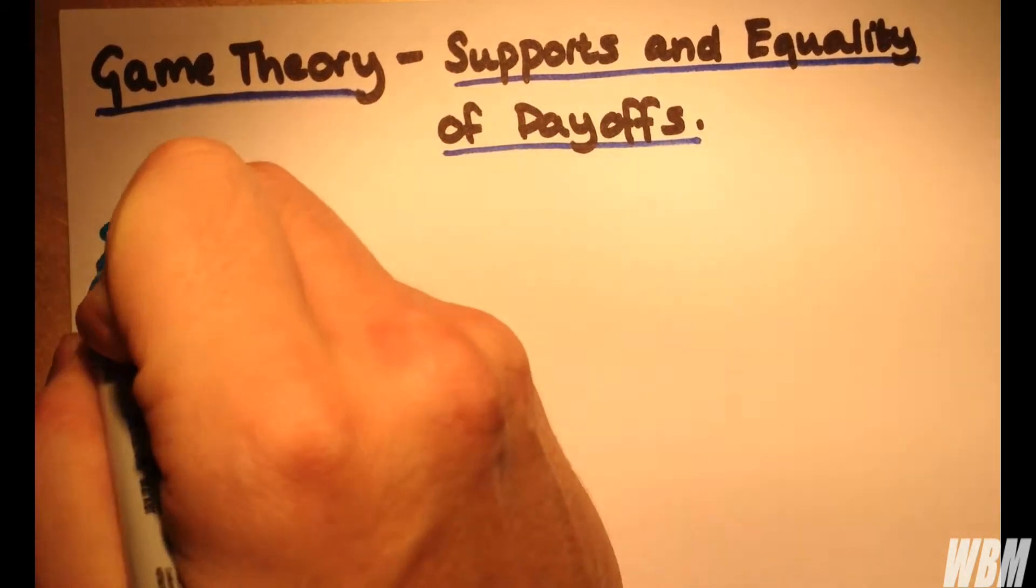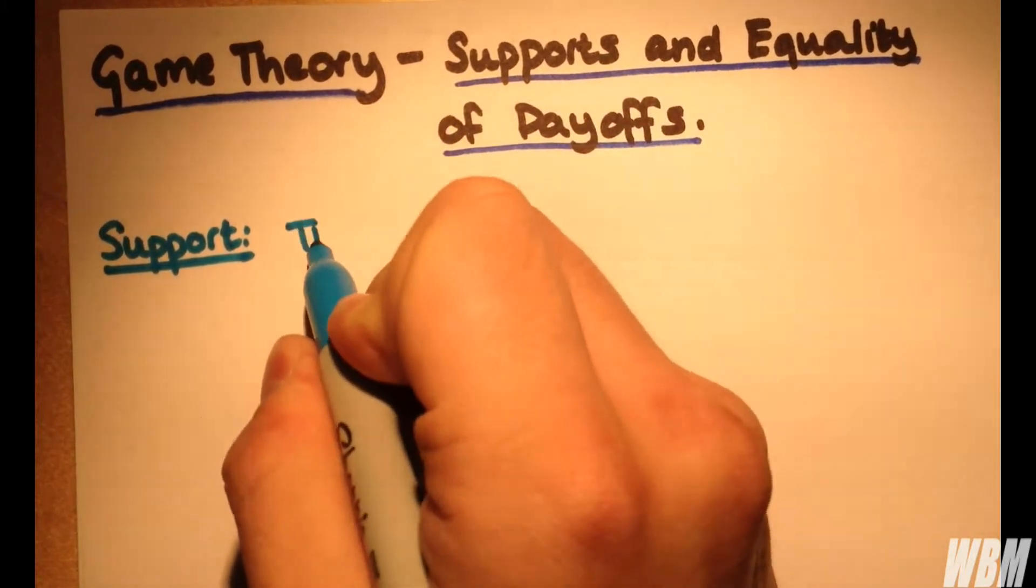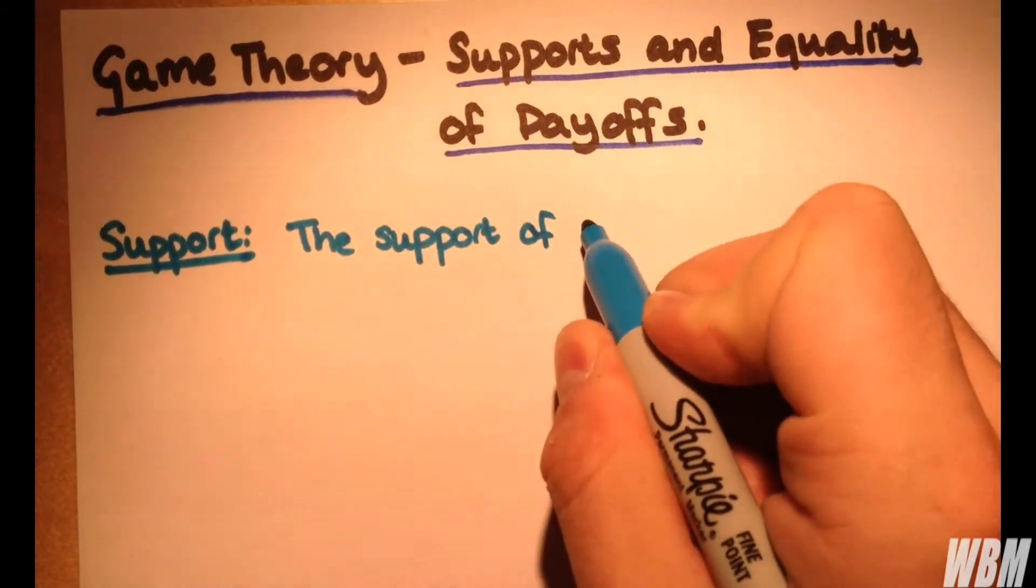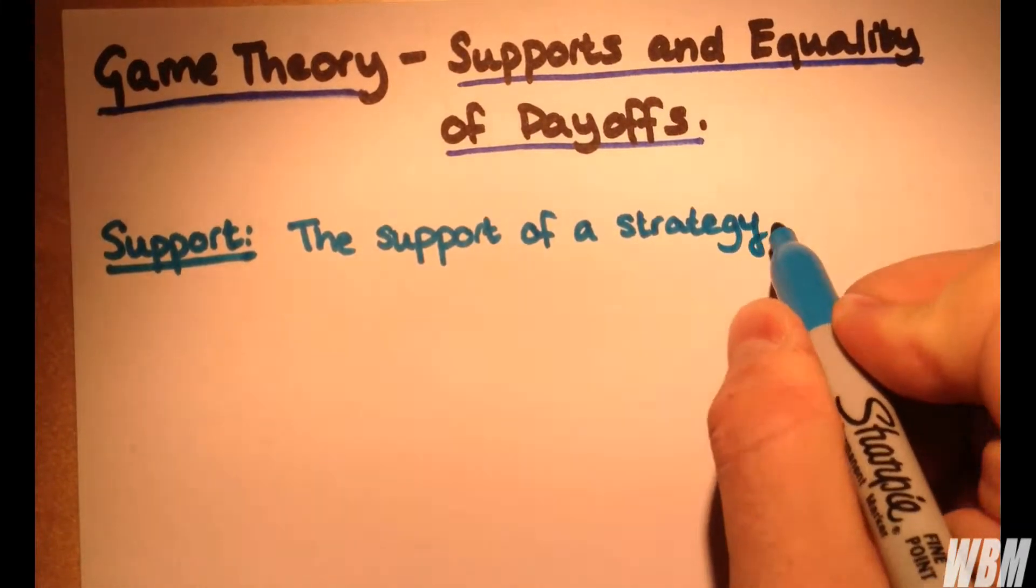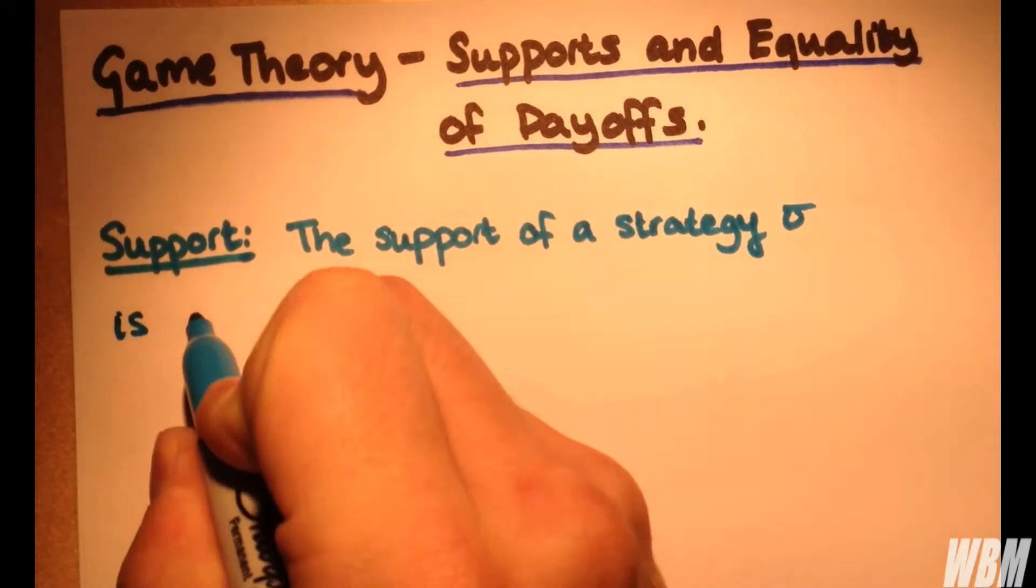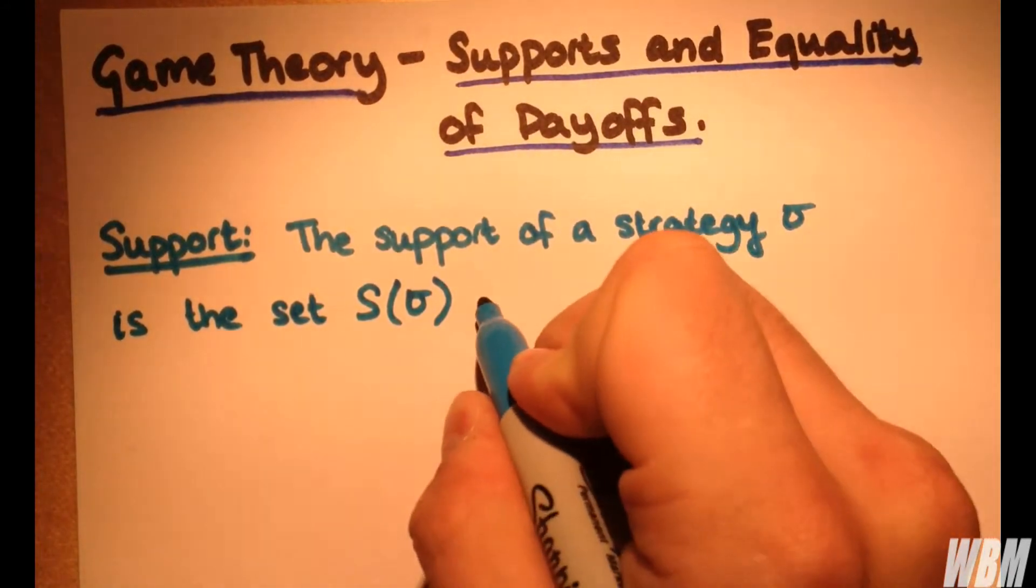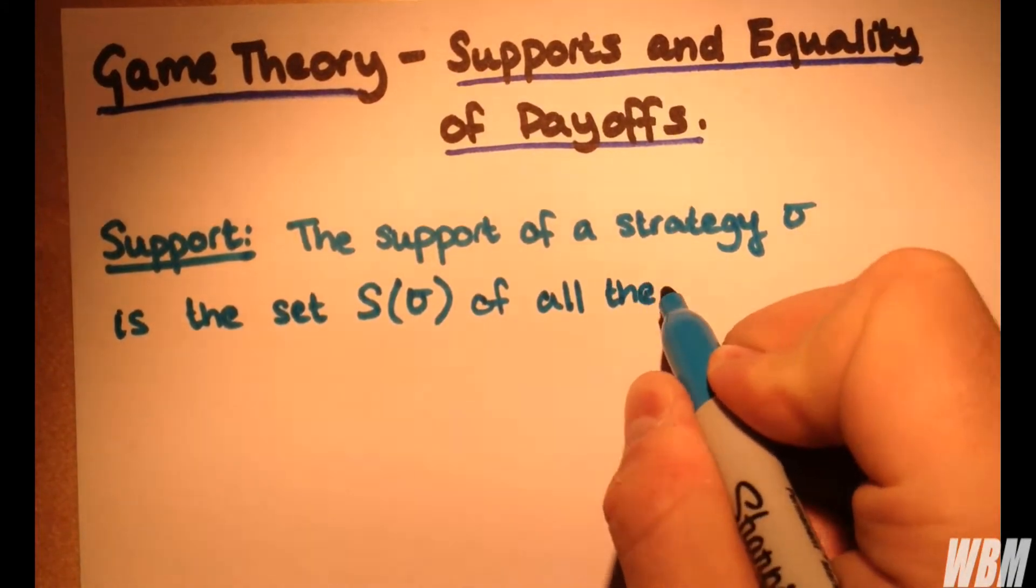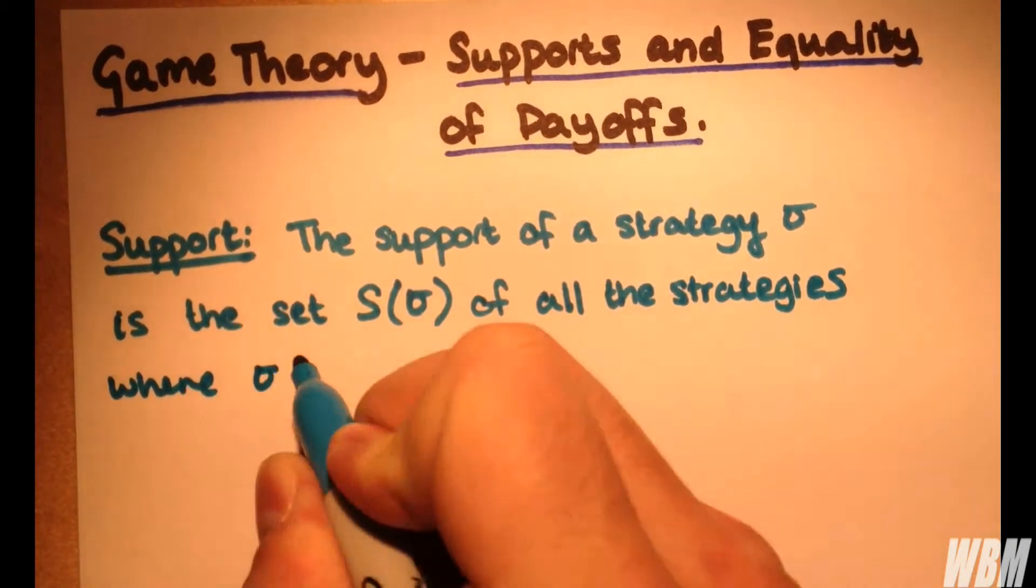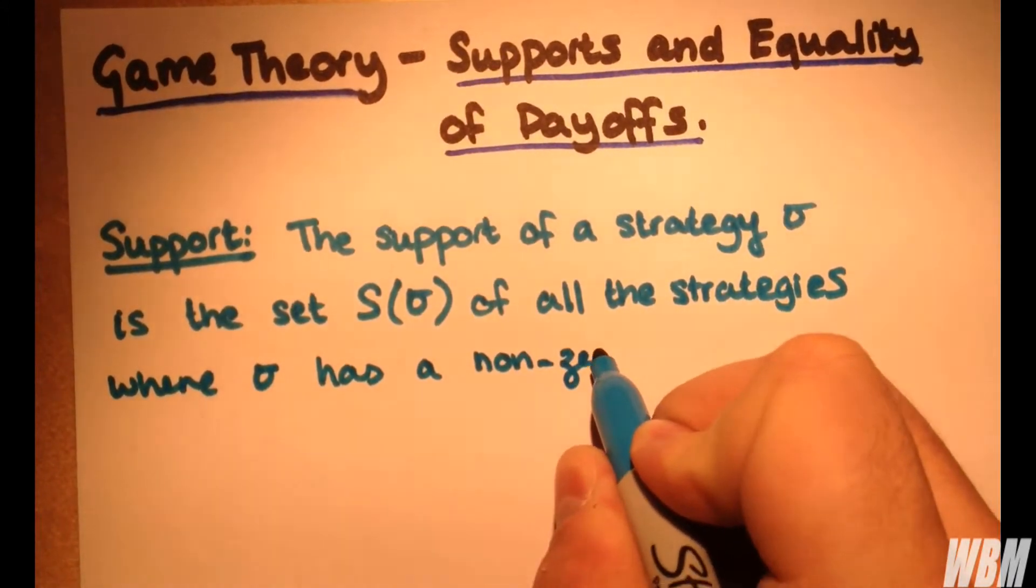So, what is a support? The support of a strategy is actually a very simple concept. In this case we'll have strategy sigma is the set, let's call it S of sigma, of all of the strategies where sigma has a non-zero probability.